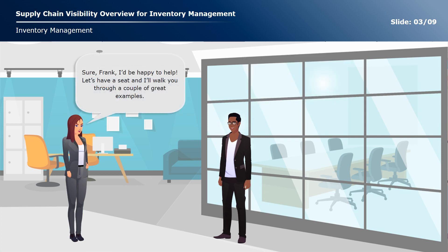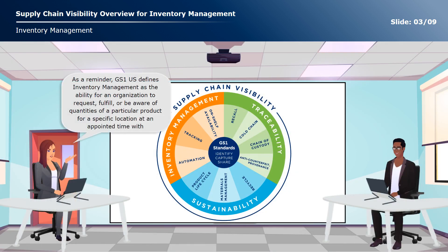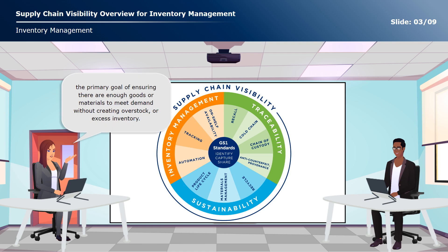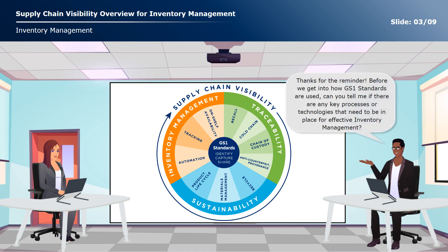Sure, Frank. I'd be happy to help. Let's have a seat and I'll walk you through a couple of great examples. As a reminder, GS1 US defines inventory management as the ability for an organization to request, fulfill, or be aware of quantities of a particular product for a specific location at an appointed time. Before we get into how GS1 standards are used, can you tell me if there are any key processes or technologies that need to be in place for effective inventory management?